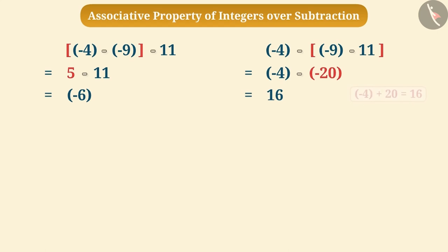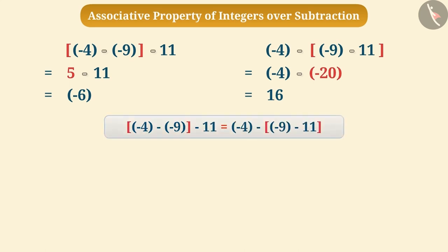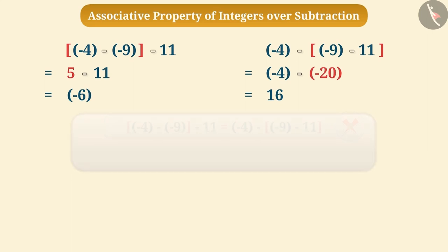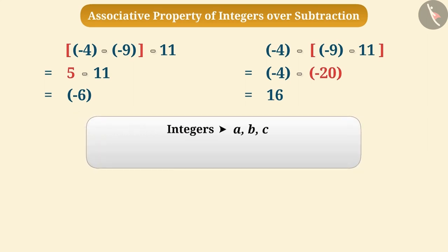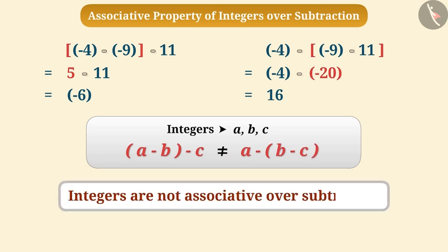The answer is not the same in both cases. From this, it is understood that we cannot group numbers in any order to perform subtraction. In general, for any three integers a, b, c: (a − b) − c ≠ a − (b − c). Therefore, integers are not associative over subtraction.